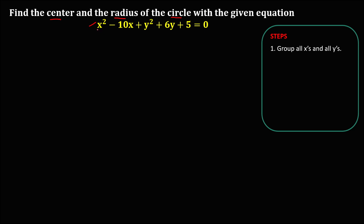For x, we have x squared minus 10x. Then for y's, we have y squared plus 6y. Then equals — we need to transpose this constant to the other side, so this becomes negative 5.